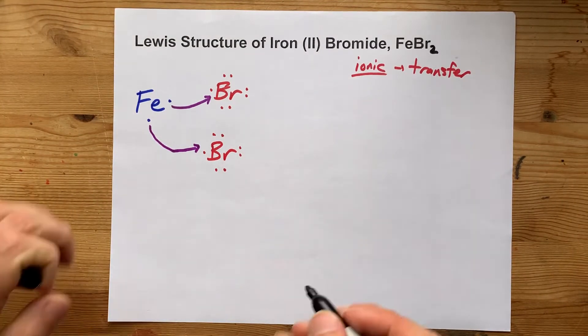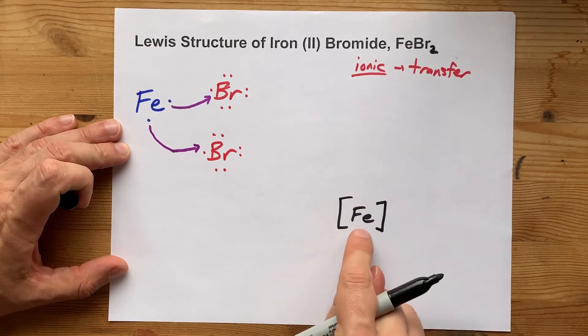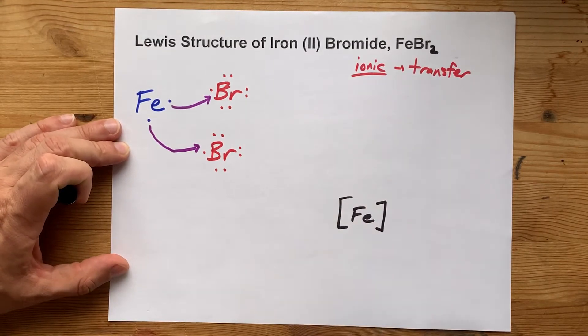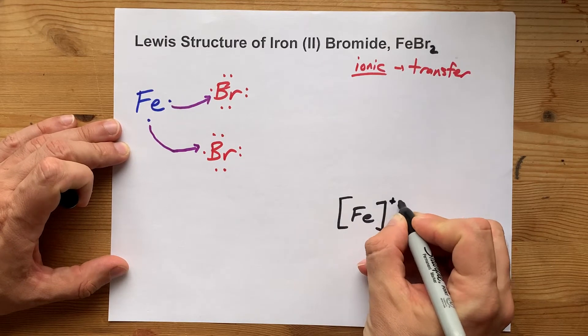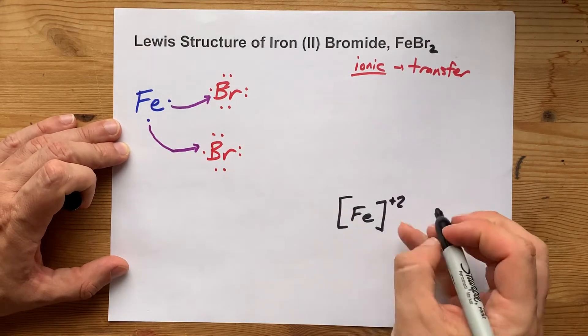So our final structure has an Fe, but it's given away both of its electrons, so don't put any dots there. And a plus-two charge, because it lost its two negatively charged electrons.